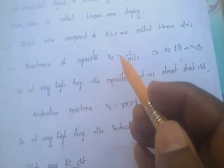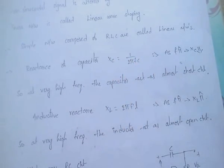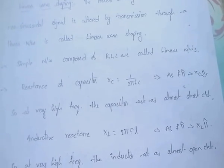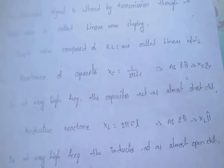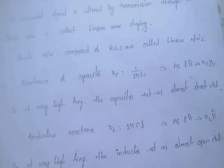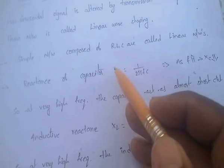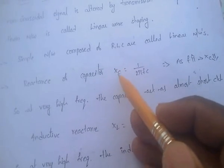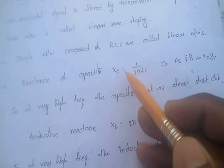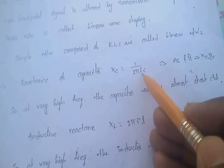We know that the capacitive reactance Xc equals 1 divided by 2πfc. This means the Xc value — capacitive reactance — is inversely proportional to frequency.